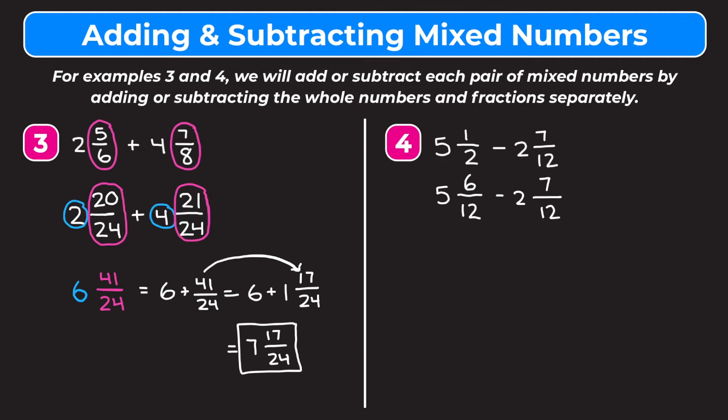Now we want to subtract the whole number parts and subtract the fraction parts. But our first fraction part is 6 twelfths and our second fraction part is 7 twelfths. 7 twelfths is greater than 6 twelfths, so we're not going to be able to subtract because we'll get a negative number and that's going to make our problem very confusing. So what we have to do is borrow from the whole number.